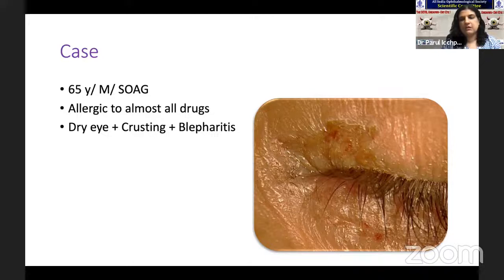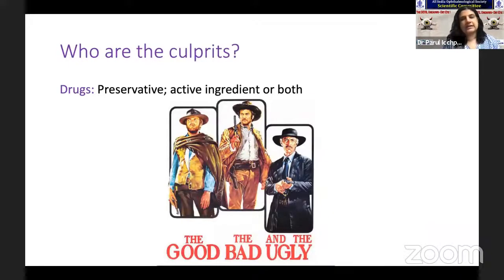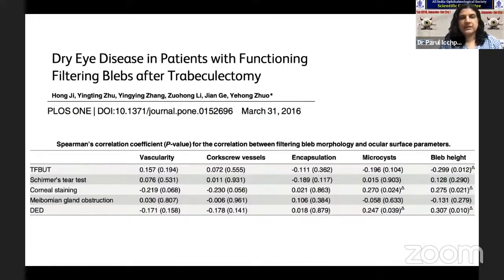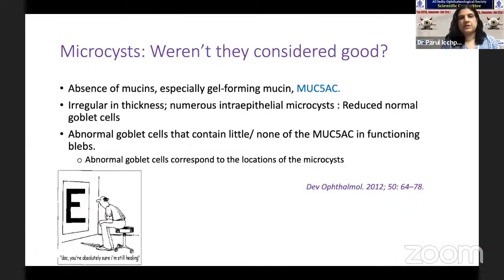Another patient, a 65-year-old male, was allergic to almost all drugs — I'd stop one and restart another, but every time ended up with dry eye, crusting, and blepharitis. There was no point playing around with drugs and it was time to consider surgery, even though the glaucoma wasn't advanced. As for who is the culprit — the preservatives, active ingredients, or both — there is no concrete answer. Excipients and buffers also contribute. One study on dry eye disease in patients with functioning filtering blebs after trabeculectomy found that bleb height and presence of microcysts were negative factors for dry eye disease.